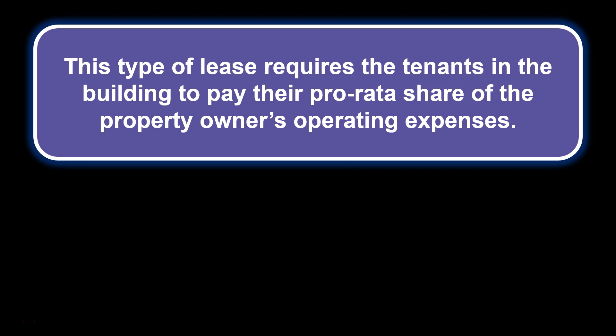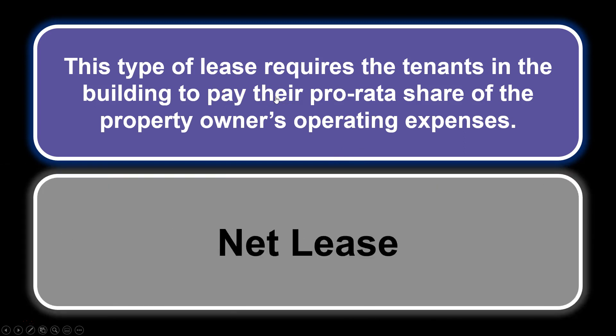This type of lease requires the tenants in the building to pay their pro rata share of the property owner's operating expenses. This is common for commercial and retail properties — tenants pay a base rent plus their pro rata share of the owner's operating expenses, including taxes, insurance, and common area maintenance charges. This is a triple net lease, also called a net lease. NNN also refers to a triple net lease.